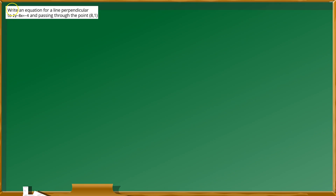I just want to answer this question: write an equation for a line perpendicular to 2y minus 8x equals negative 4 and passing through the point (8, 1).